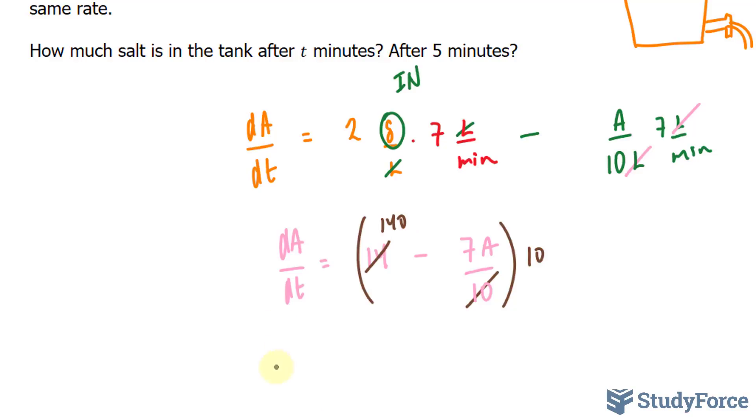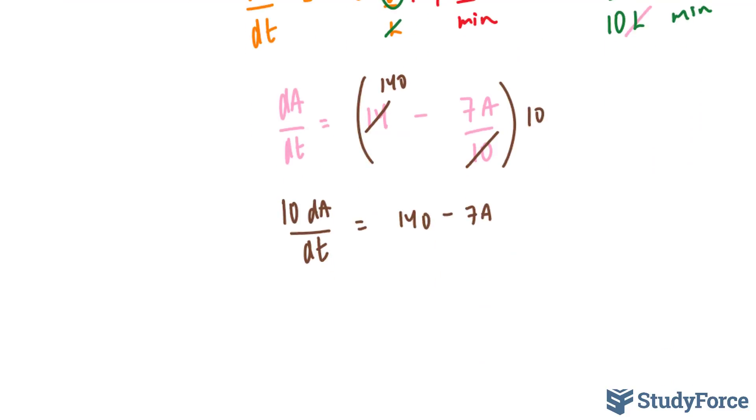And on the left side, I have 10 dA over dt is equal to 140 minus 7A. The reason why I did that is because I wanted to clear the denominators. That makes it easier for me to do what I have to do.